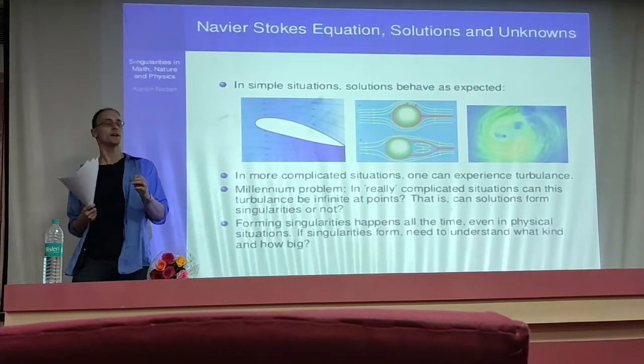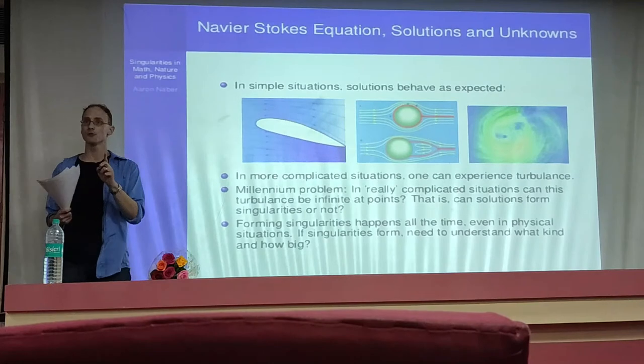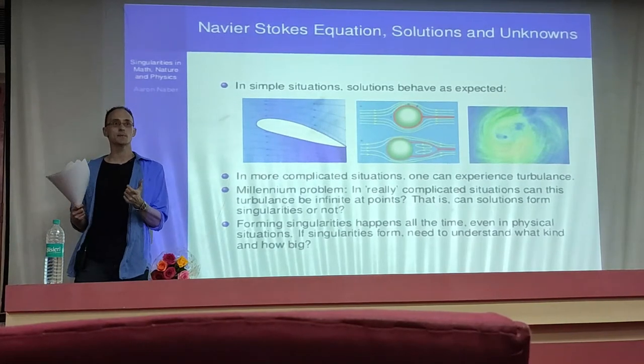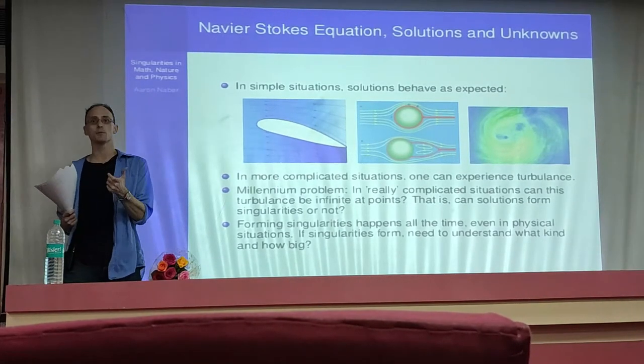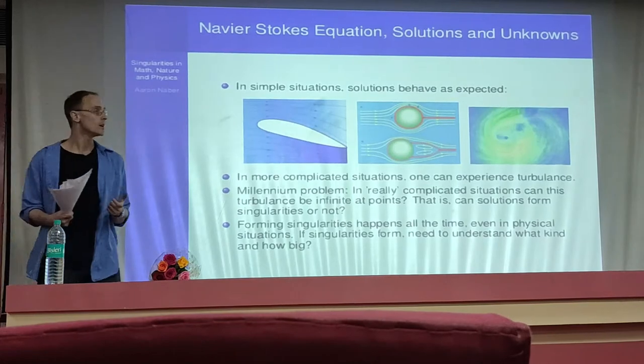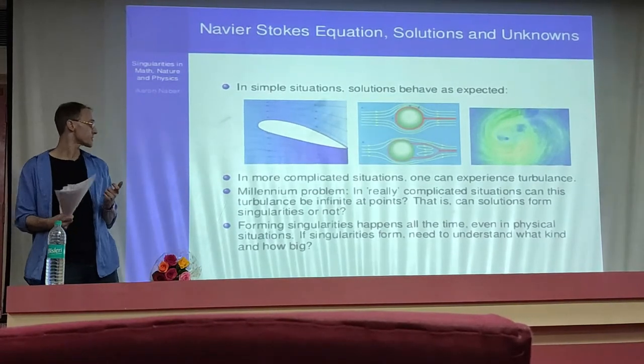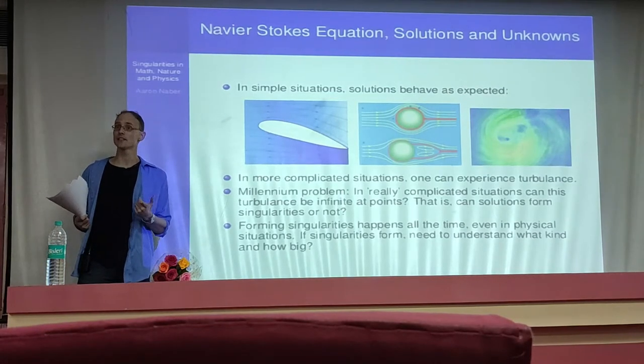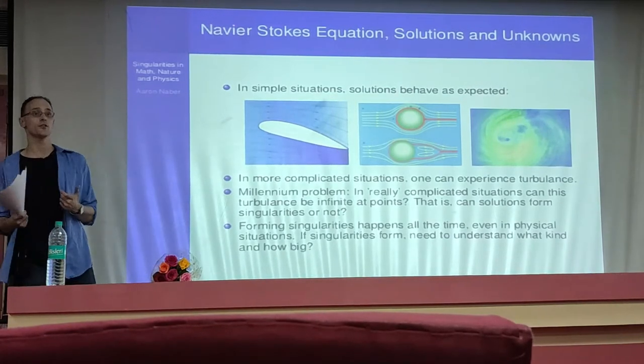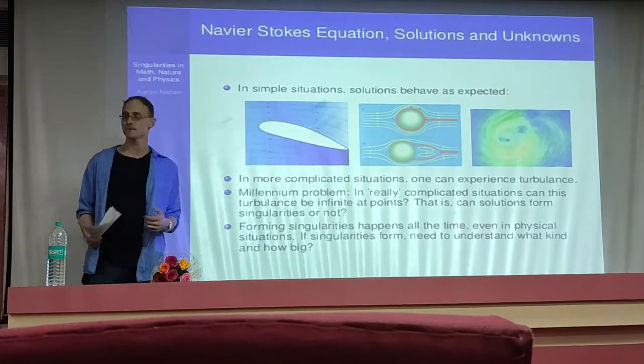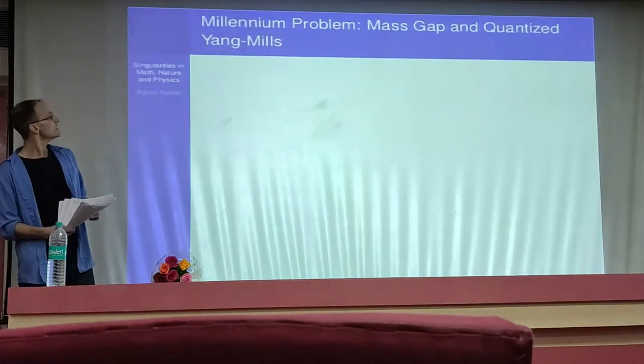The question is, how bad can it actually get in really complicated situations? Can these things actually form singularities? Can velocity become infinity? Can pressure become infinity? This is unknown. It's not a ridiculous idea that it would be true. Most money at this point is that they do form singularities. This seems to be how they're heading. They seem to be fairly close to actually getting an example of showing singularities can form. At which point the question then becomes, how big are these singularities? What do they look like? What's their behavior?